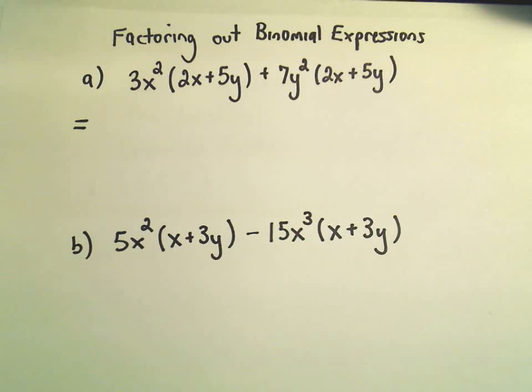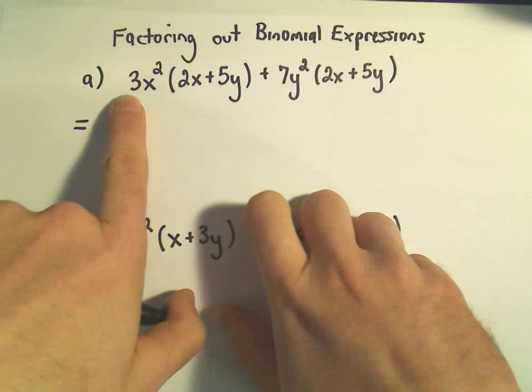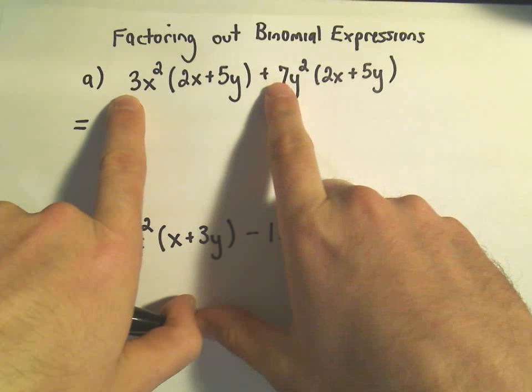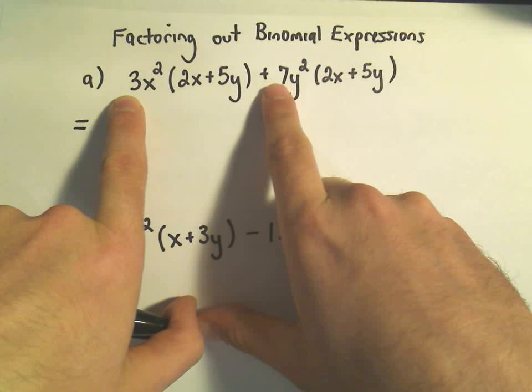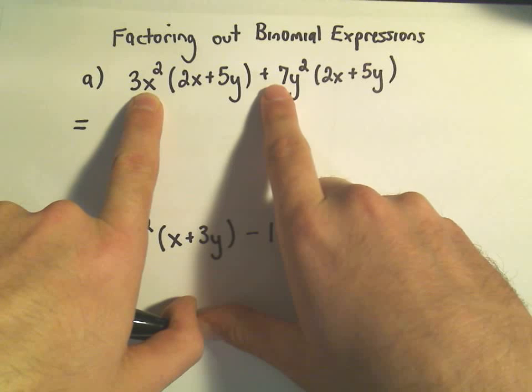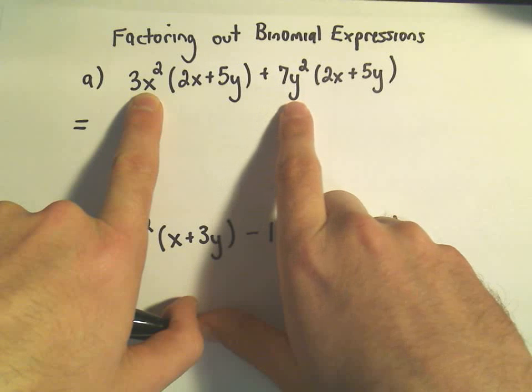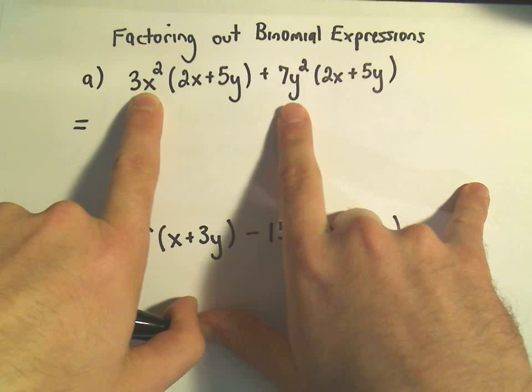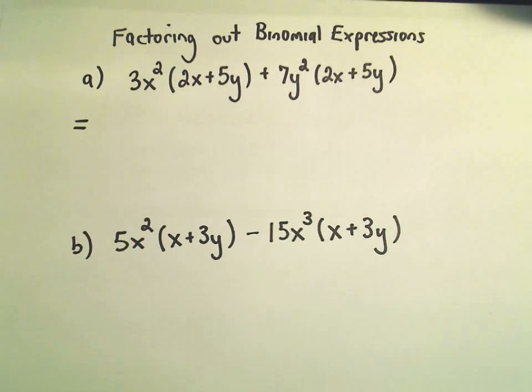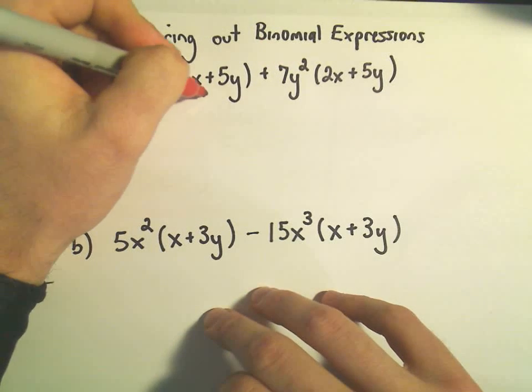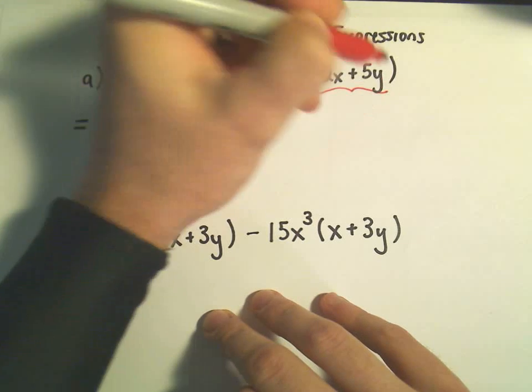When I go to factor things out, the first thing I think is, what's the greatest common factor of 3 and 7? Well, the biggest number that divides evenly into both of those is just positive 1, so there's really nothing to factor out. I see an x to a power in the first one, but the second term has y's but no x's, so I can't factor out any x's or y's. But I do see the same thing in parentheses, I see this 2x plus 5y. That's the thing that is in common to both of them, so that means we can factor it out.